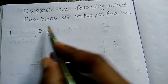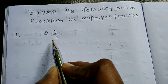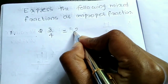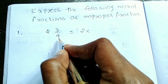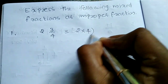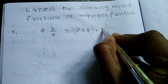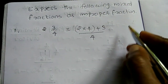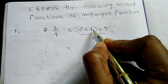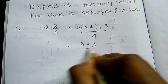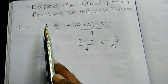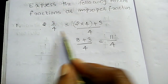Now express the following mixed fractions as improper fractions. For 2 and 3/4: multiply 2 into 4 plus 3, divided by 4. So 2 into 4 is 8, plus 3 is 11, divided by 4. So the improper fraction of 2 and 3/4 is 11 by 4.